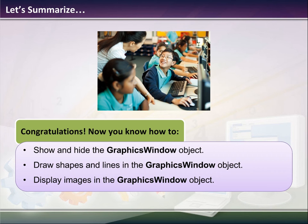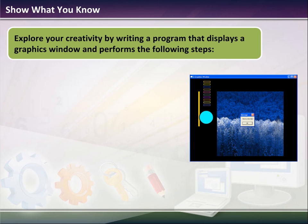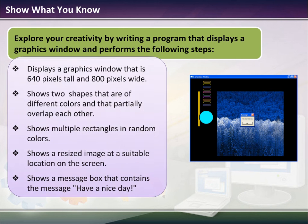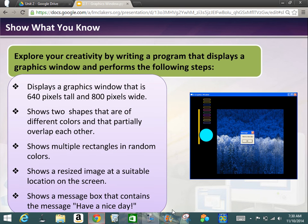To summarize, we've learned how to show graphics window objects, draw shapes and lines, and display images in the graphics window. As a creative exercise, write a program that displays a graphics window 640 pixels tall and 800 pixels wide, shows two differently colored shapes that partially overlap, displays multiple shapes in random colors, shows a resized image at a suitable location, and shows a message box with a message like 'Have a nice day.'